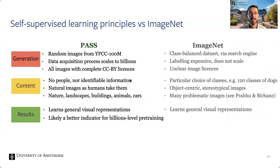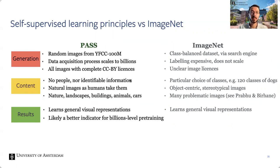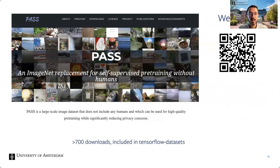Even using just 5% of labeled training data with humans, the network can fine-tune its representations — which had no idea about humans — to properly detect human keypoints. Our process can scale to billions of images. Our dataset is likely a better indicator because it's random, non-curated, non-object-centric images, and we still learn very generic visual representations without having humans in our dataset, minimizing risk. Please visit our webpage — we've counted more than 700 downloads and it's also included in TensorFlow Datasets.